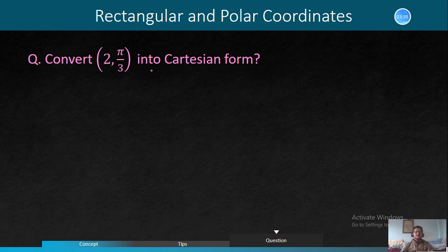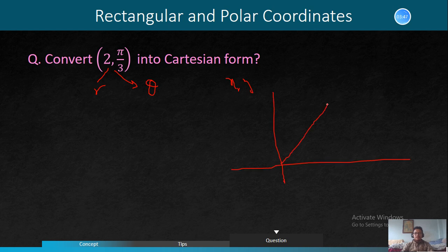Convert (2, π/3) into Cartesian form. R is 2, and theta is π/3. Now find X and Y. The distance is 2, so the length is 1 and √3. What are the rectangular coordinates X and Y?